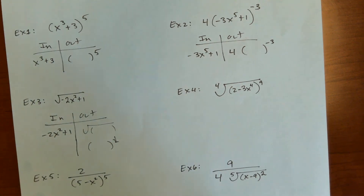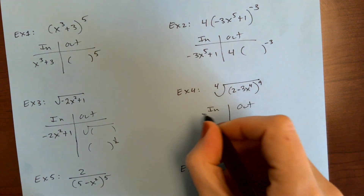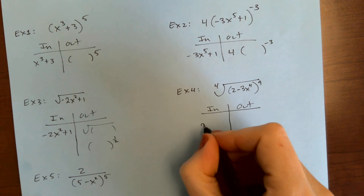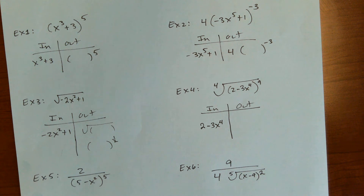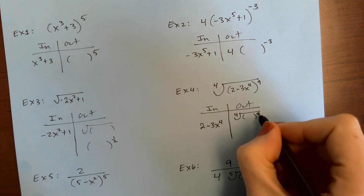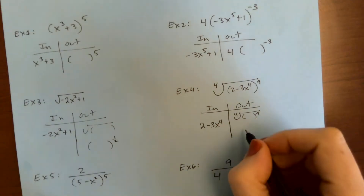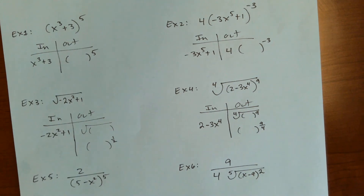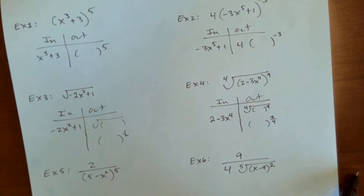Now this one here. I'm looking for the inside function under a radical or inside parentheses. Here I have both things going on. I've got two minus three x to the fourth — that is the inside function; it's inside parentheses. For the outside function, I remove that, so I've got the fourth root of blank to the ninth. That is the same as blank to the nine over four, and now it is of the form A-blank to the N, which is what the directions want.